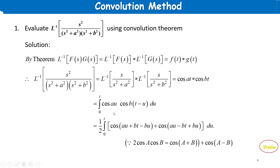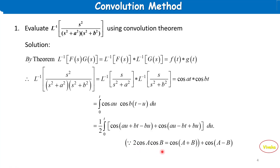So the integral from 0 to t: first function is cos(au), second function is cos(b(t−u)) du. We integrate the product of two trigonometric functions using the trigonometric product formula: 2cos(A)cos(B) = cos(A+B) + cos(A−B).